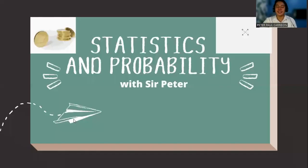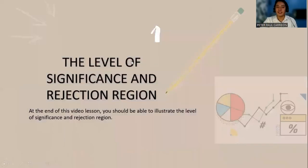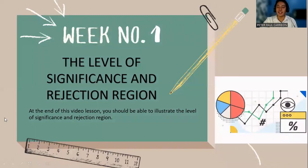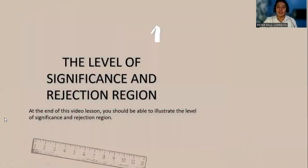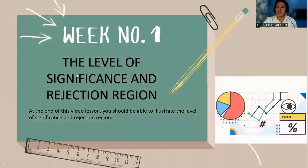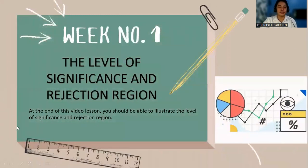A pleasant day, STEM learners. This is Sir Peter, your statistics and probability teacher. For today's discussion, we will talk about the level of significance and the rejection region. At the end of this video lesson, you should be able to illustrate the level of significance and the rejection region.